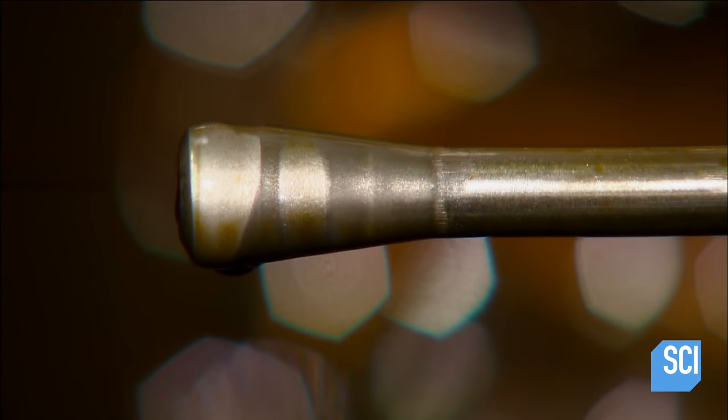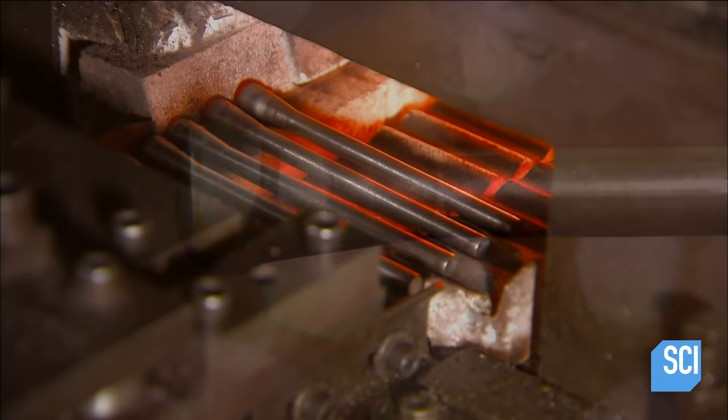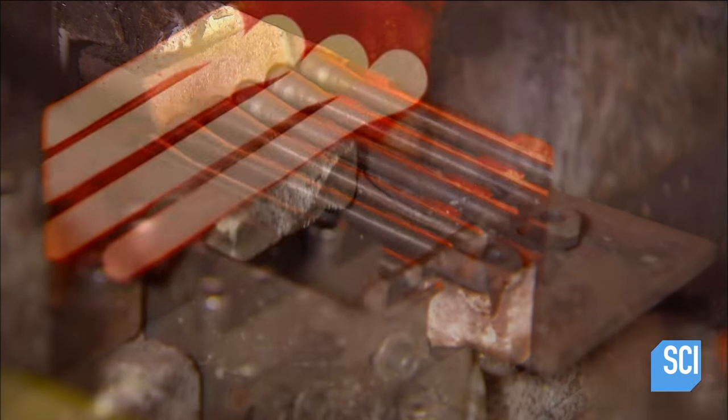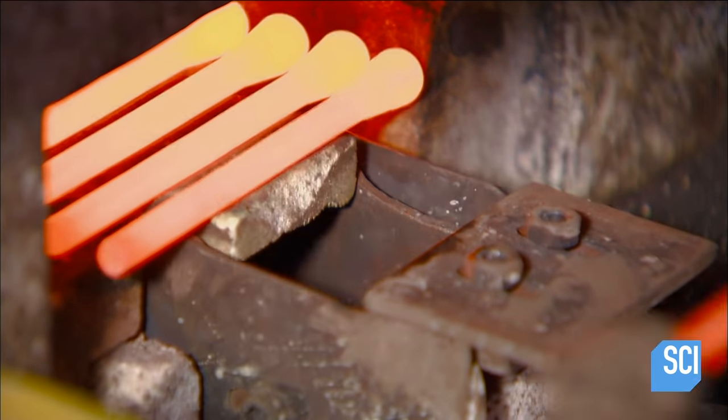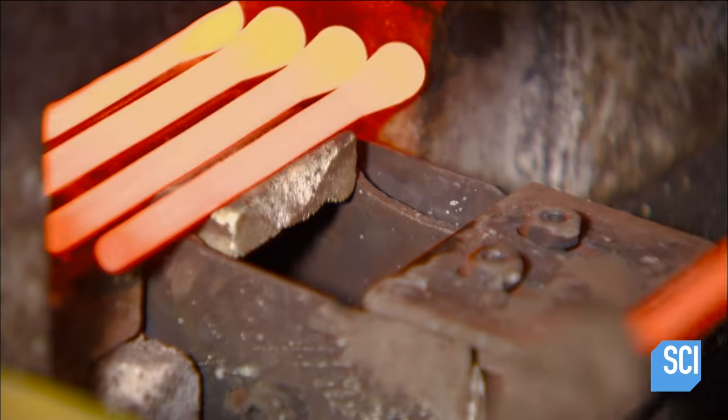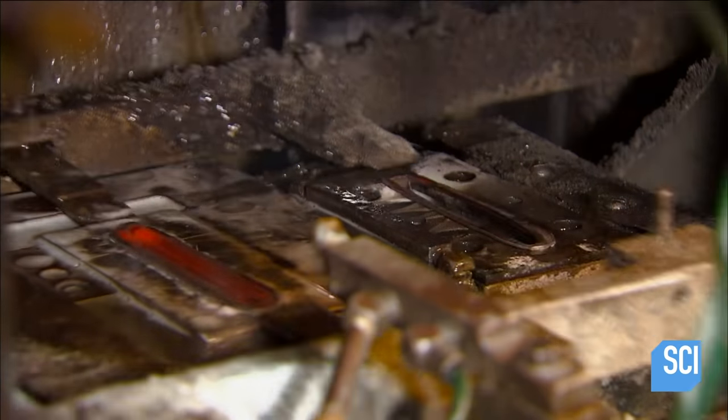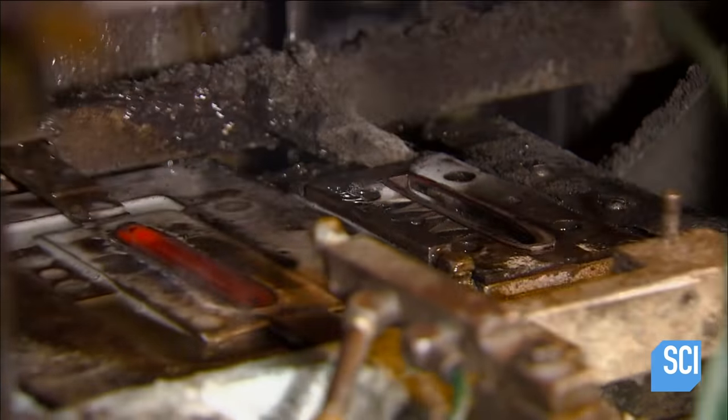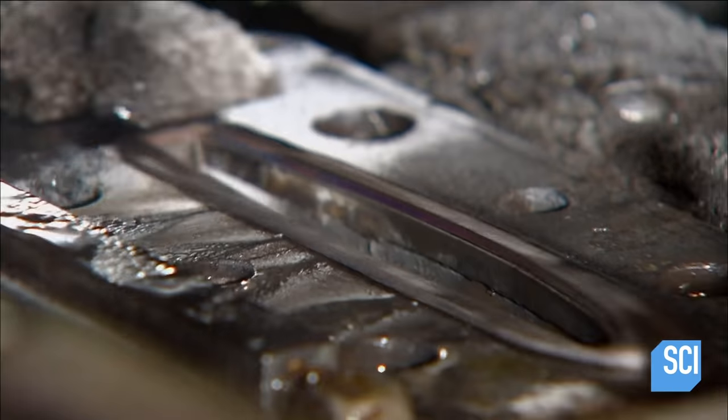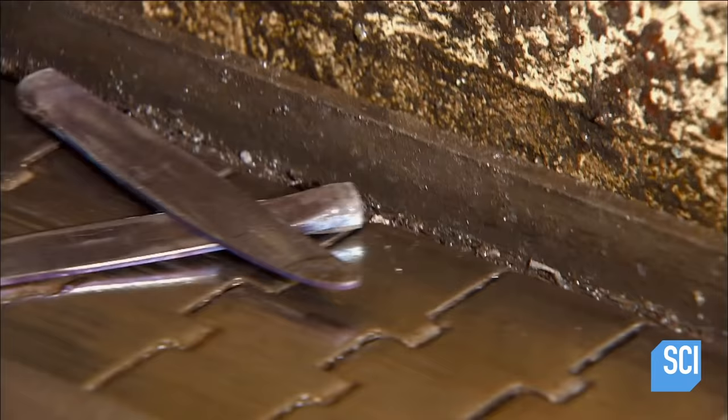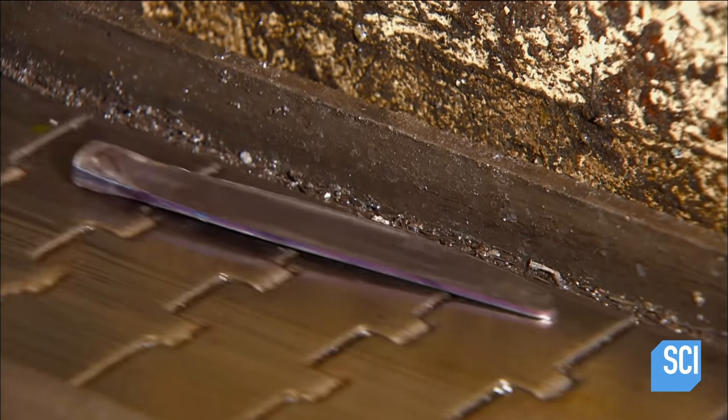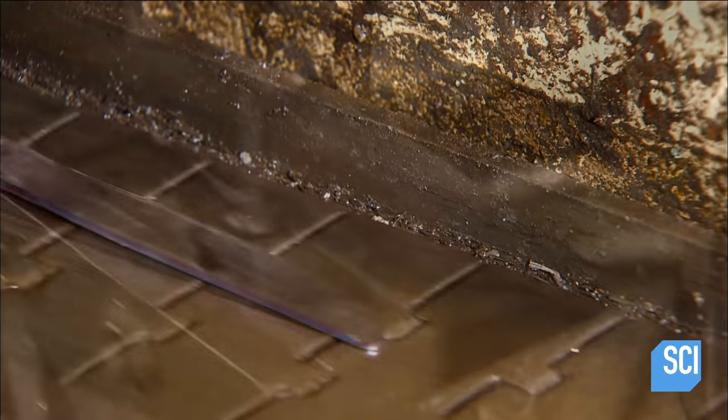A furnace softens the metal so it can be shaped in a forging press. A series of dies progressively shape the metal. After grinding the end of the bolster flat, the next machine welds on the tang.